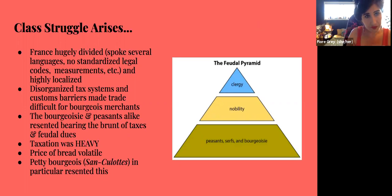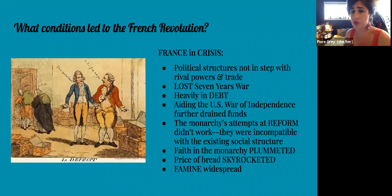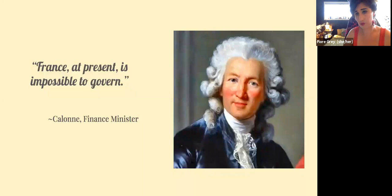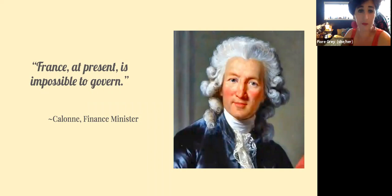France was in crisis — its political structures were not in step with rival powers or the trade of rival countries. They lost the Seven Years' War, were heavily in debt, and then further drained their funds aiding the American War of Independence. The monarchy's attempts at reform totally didn't work — they were incompatible with existing social structures. Faith in the monarchy plummeted at the same time the price of bread skyrocketed and famine was widespread. As finance minister Calonne put it: 'France at present is impossible to govern.'